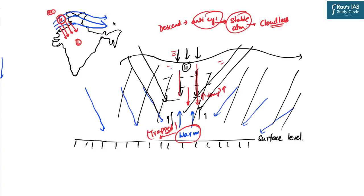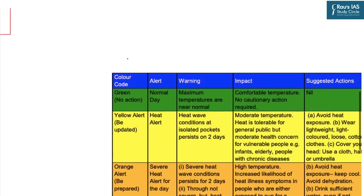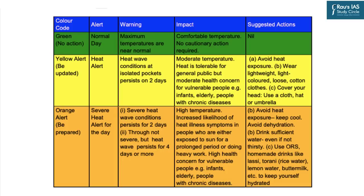The role of jet streams is very important when it comes to heat waves over India's northern part. Try to brainstorm and link how a similar condition — the presence of jet streams — is also responsible for the burst of monsoon in India, because the concept remains the same. Now let us look at the color coded warning systems given by IMD in regard to heat waves.